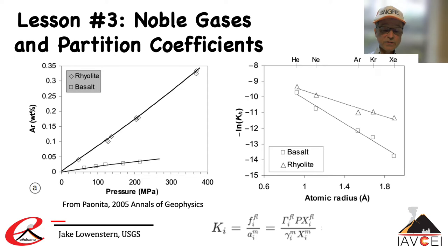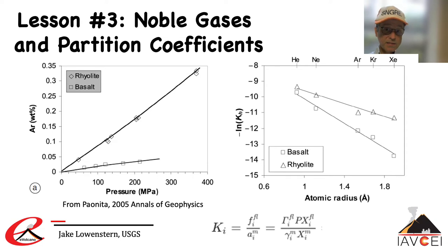The diagram on the right depicts partition coefficients for different noble gases. The partition coefficient K is proportional to the concentration of an element X sub i in the vapor or fluid compared to its concentration in the melt, accounting for complexities like fugacity coefficients and activity coefficients. K is really no different than a Henry's Law constant for nickel going into olivine. The plot shows higher solubility of noble gases in rhyolite compared with basalt, as well as greater solubility of light noble gases — for example, helium — compared with heavy ones like krypton and xenon. These partition coefficients imply very low concentrations of noble gases in real magmas. For example, if the vapor phase had one mole percent helium — which is a lot — it would imply around one part per million helium dissolved in the melt.